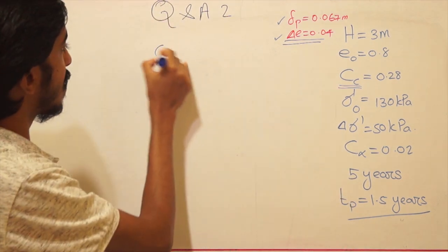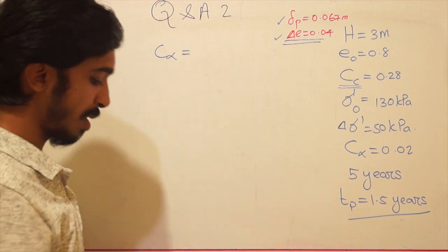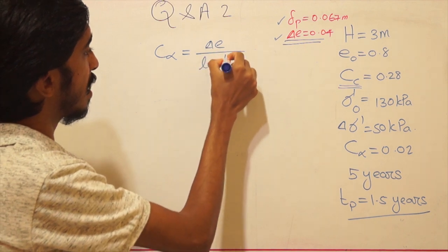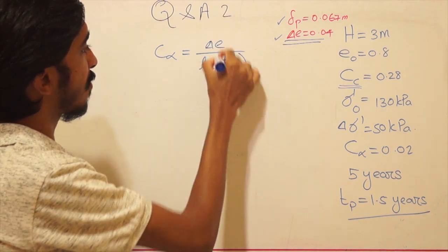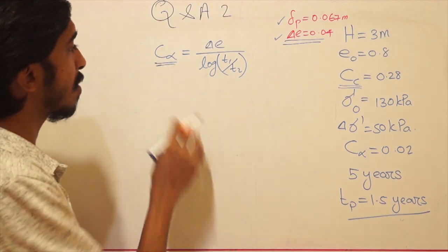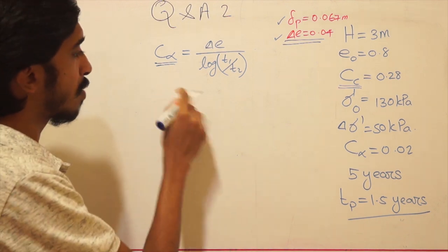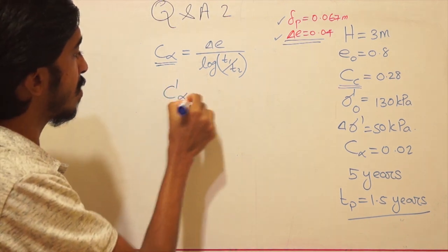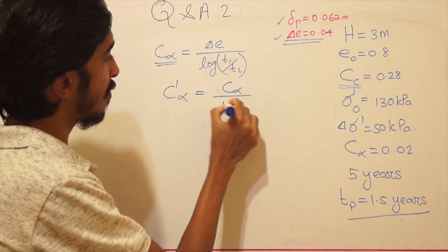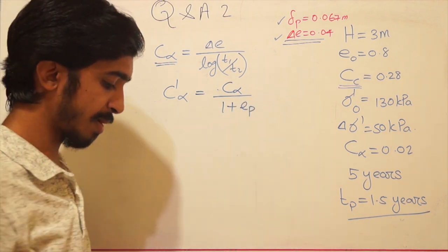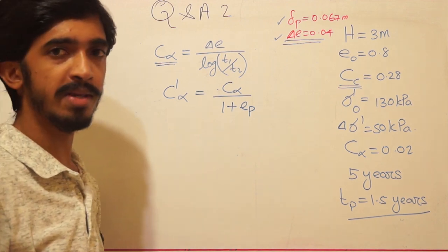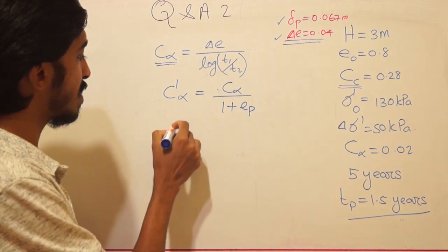We know that Cα = Δe / log(t1/t2), obtained from the graph. However, we use a corrected value C'α = Cα / (1 + ep) to account for the change in initial conditions. This is a small but important correction.